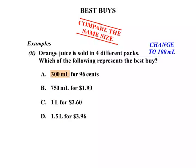The first one is 300ml. To break that down to 100ml we need to divide by 3. Our price is 96 cents. Divide that by 3 and we get 32 cents.